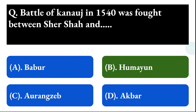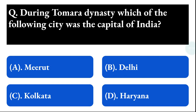Next question: during the Tughlaq dynasty, which of the following cities was the capital of India? Option A: Meerut, option B: Delhi, option C: Kolkata, option D: Haryana. The correct answer is option B, that is Delhi.